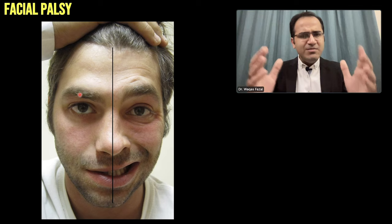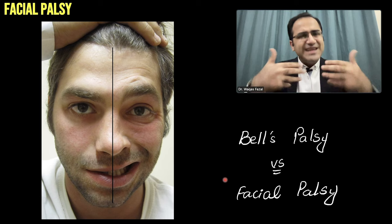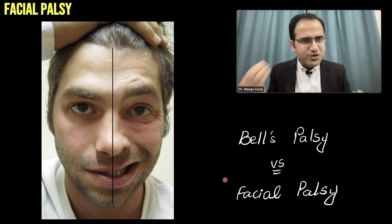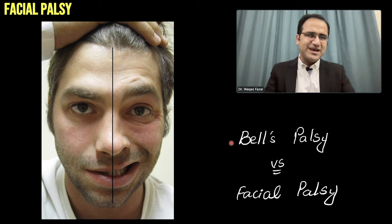Remember the difference between Facial Palsy and Bell's Palsy is that Facial Palsy is a bigger, umbrella term. Bell's Palsy is a type of Facial Palsy. Facial Palsy can occur due to simple infection, inflammation, tumor, or stroke — there are many causes. But when the cause is idiopathic and we do not know the cause, that is called Bell's Palsy.